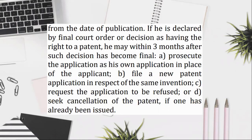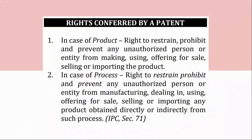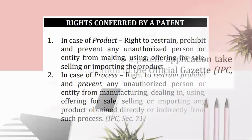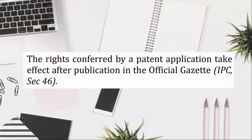Rights conferred by a patent: (1) in case of product, right to restrain, prohibit, and prevent any unauthorized person or entity from making, using, offering for sale, selling or importing the product; (2) in case of process, right to restrain, prohibit, and prevent any unauthorized person or entity from manufacturing, dealing in, using, offering for sale, selling or importing any product obtained directly or indirectly from such process. IPC, Section 71. (3) Right to assign the patent, to transfer by succession, and to conclude licensing contracts. IPC, Section 71.2. The rights conferred by a patent application take effect after publication in the Official Gazette, IPC, Section 46.